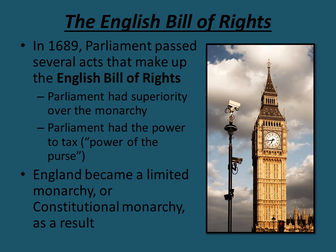The big thing was they had the power to tax — the power of the purse. They controlled the purse strings: how much money got brought in, how much money got spent. As a result, England became what was known as a limited monarchy or a constitutional monarchy.